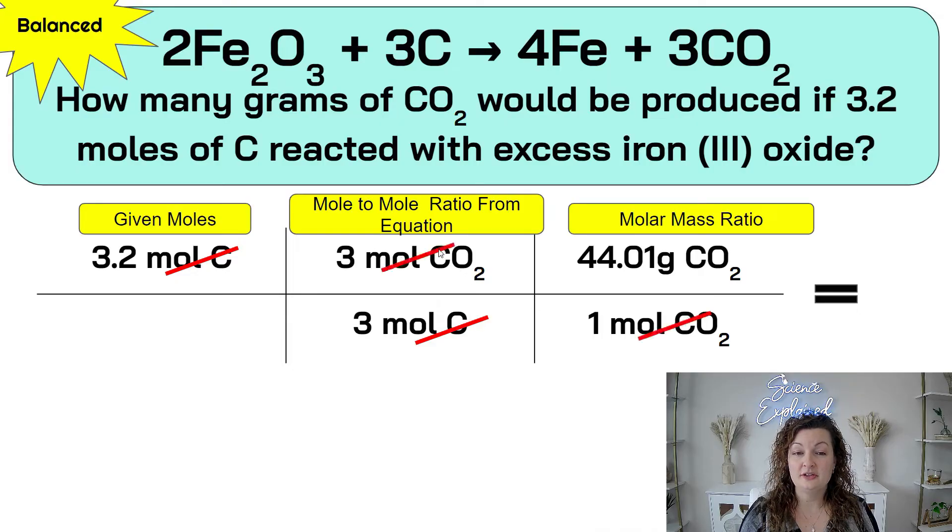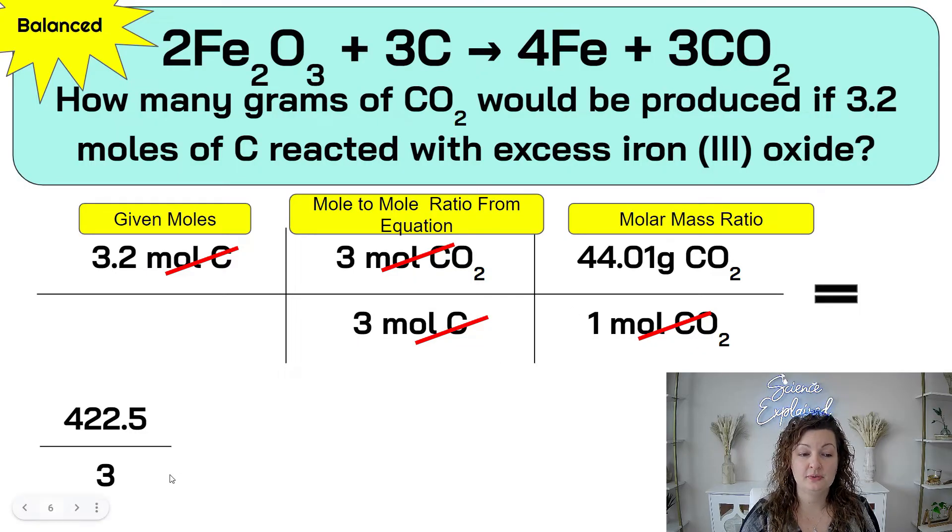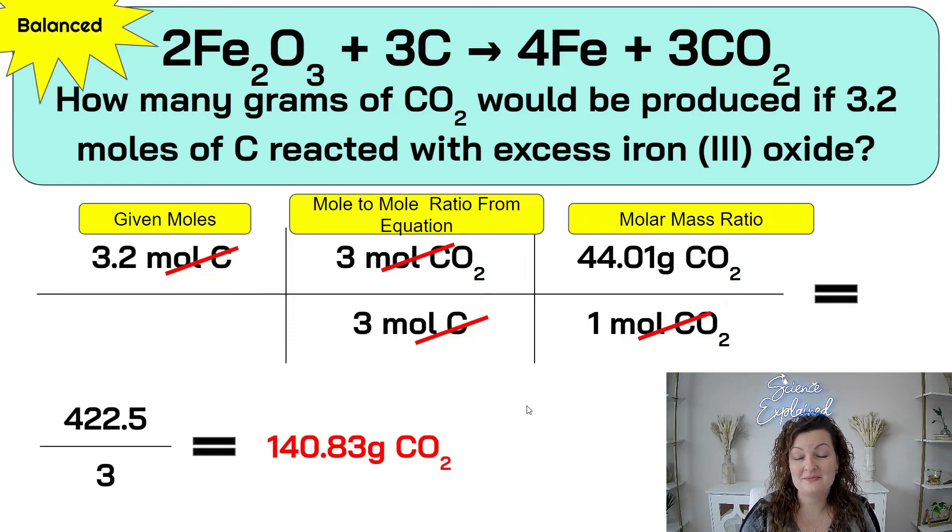Now we can cancel out our units, one mole of CO2 or moles of CO2 to moles of CO2 cancel and do our math. Our math is the same for every bridge. You multiply the top, you multiply the bottom, and then we divide. So it looks like this in your calculator. 3.2 times three times three times 44.01, and you end up getting 422.5. Then you're going to multiply the bottom. Three times one equals three. Now you're going to put these in your calculator and divide. The top number goes in the calculator first. So you're going to type in 422.5 divided by three, and you end up getting 140.83 grams of CO2.